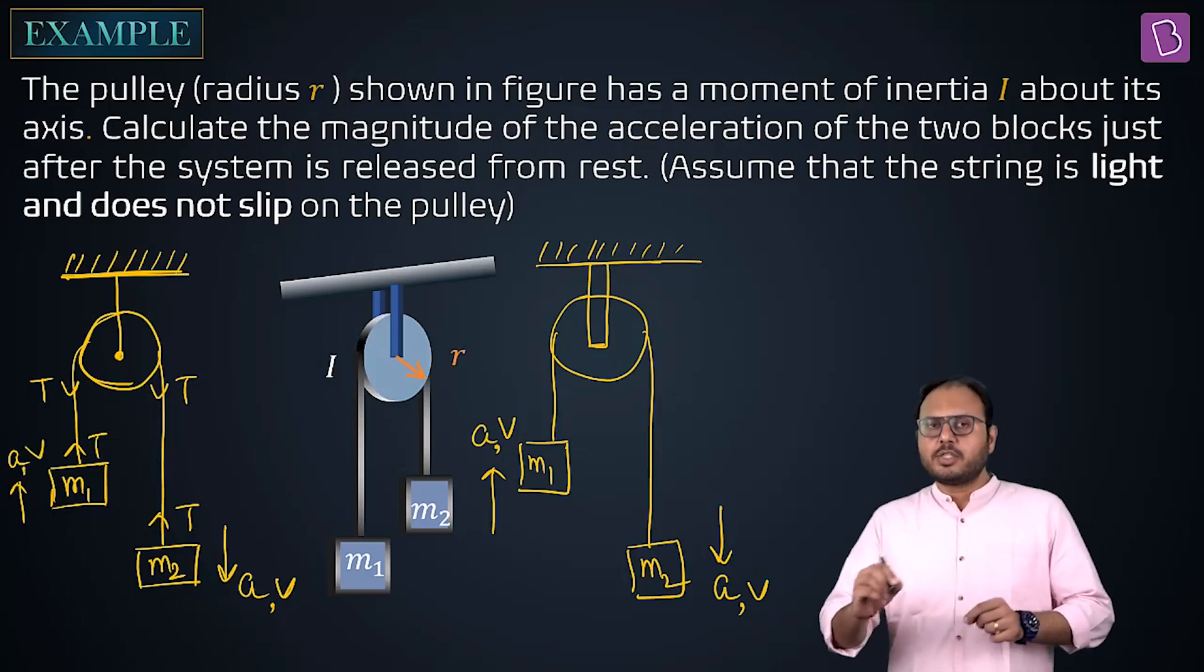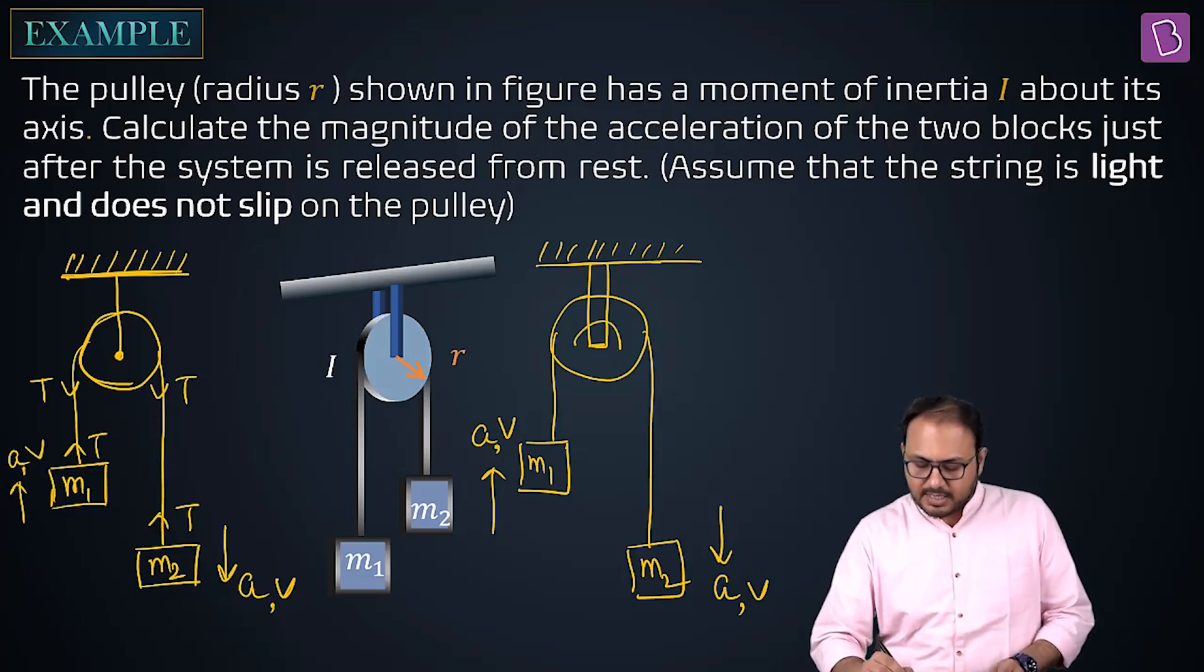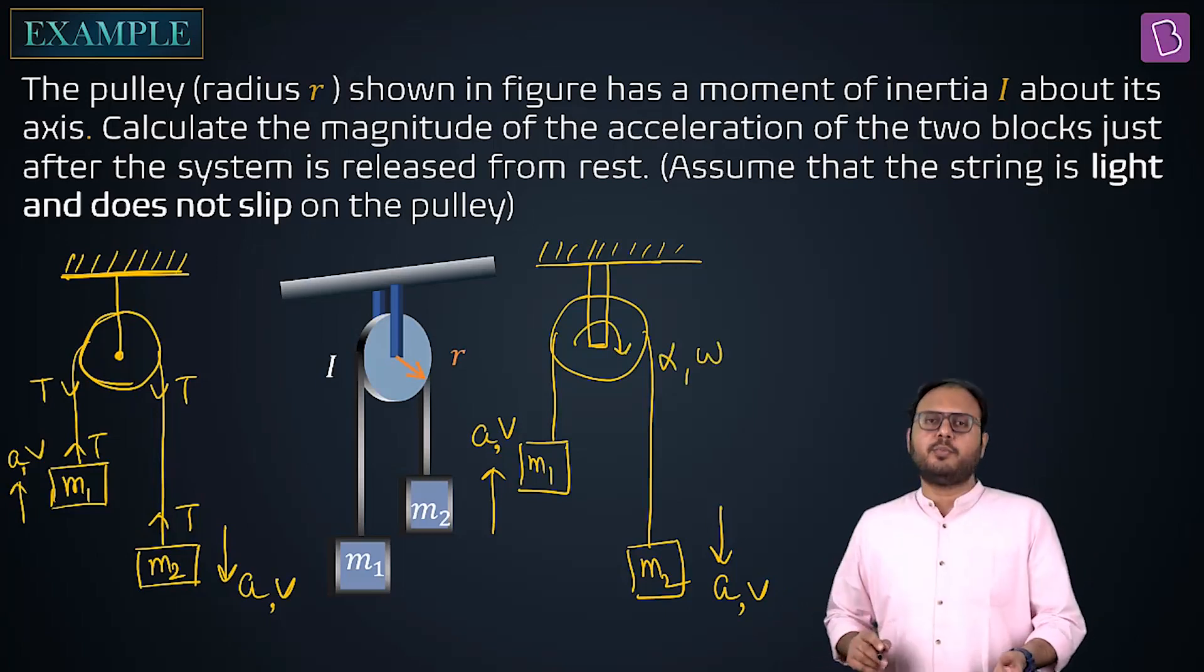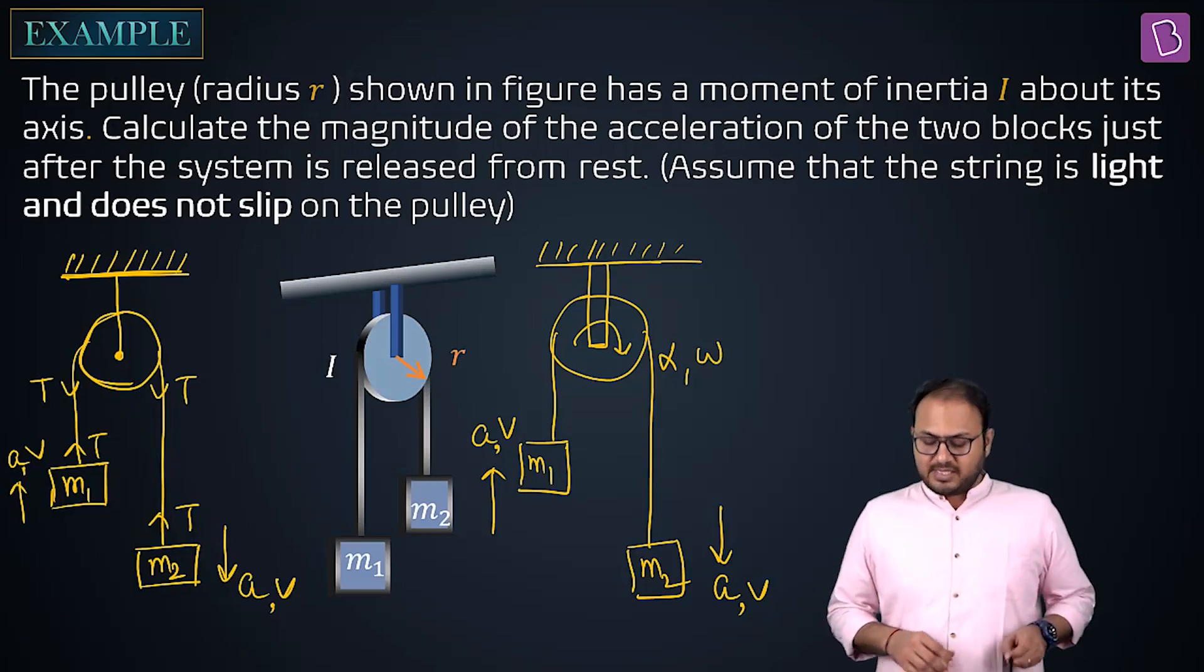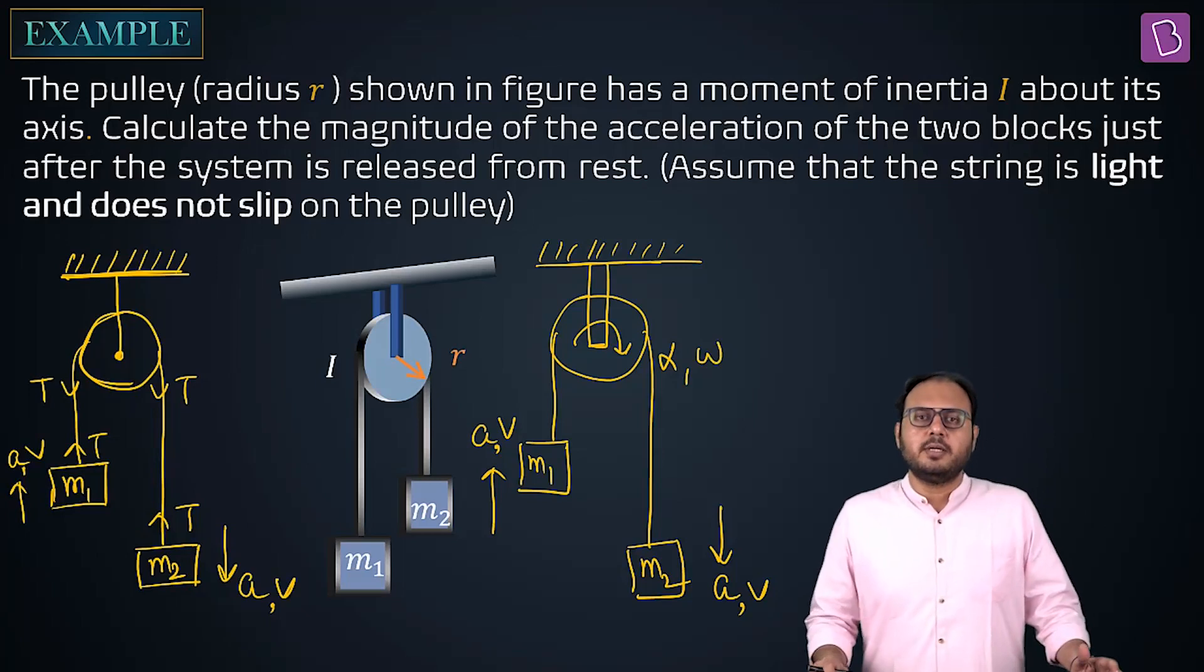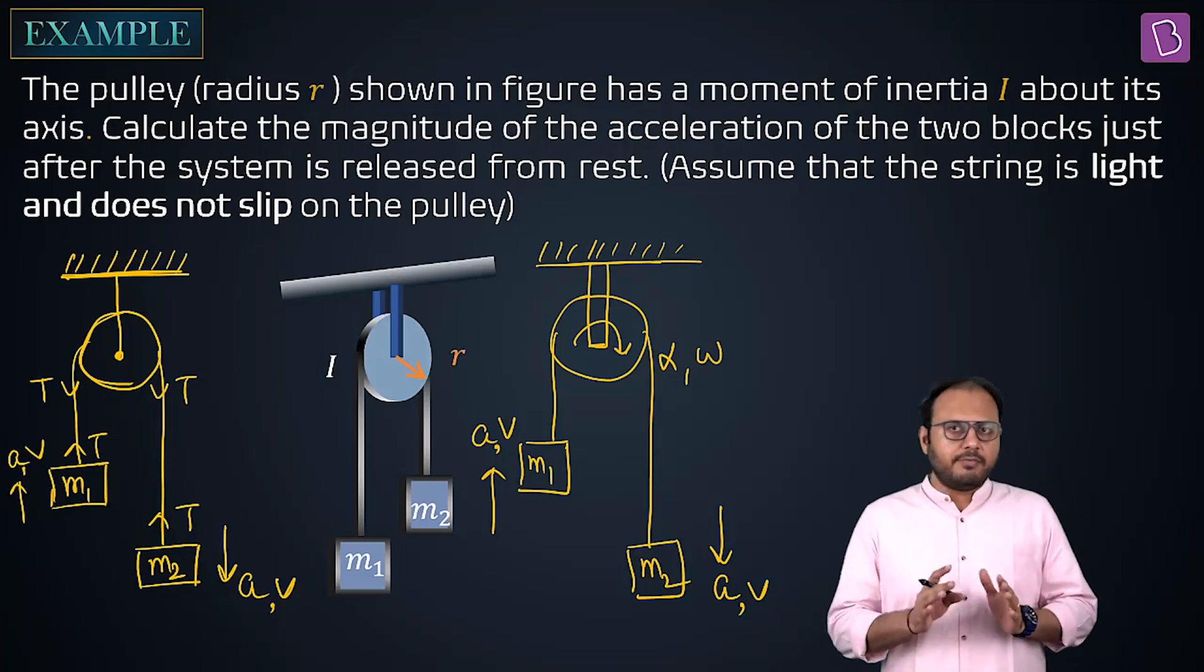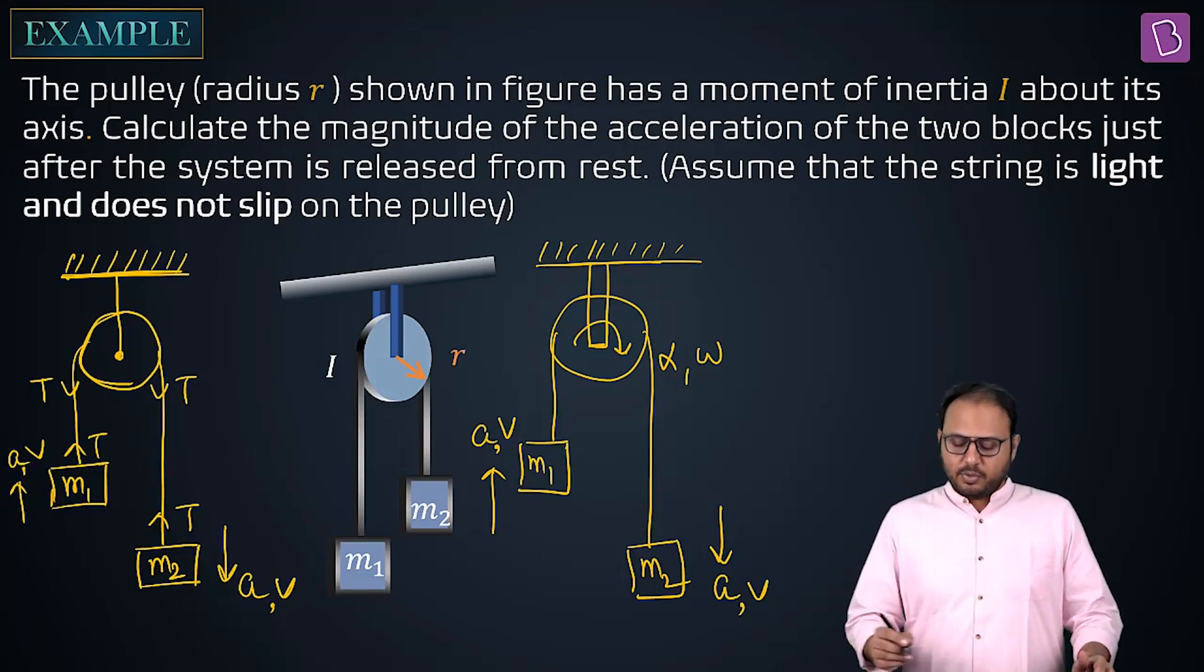But the string does not slip on the pulley means what happens? The pulley rotates. If the pulley rotates, all I mean to say is that there will be an alpha or omega of the pulley also. Take your time. And the biggest difference I still haven't put it yet, but I want you to digest this thing first.